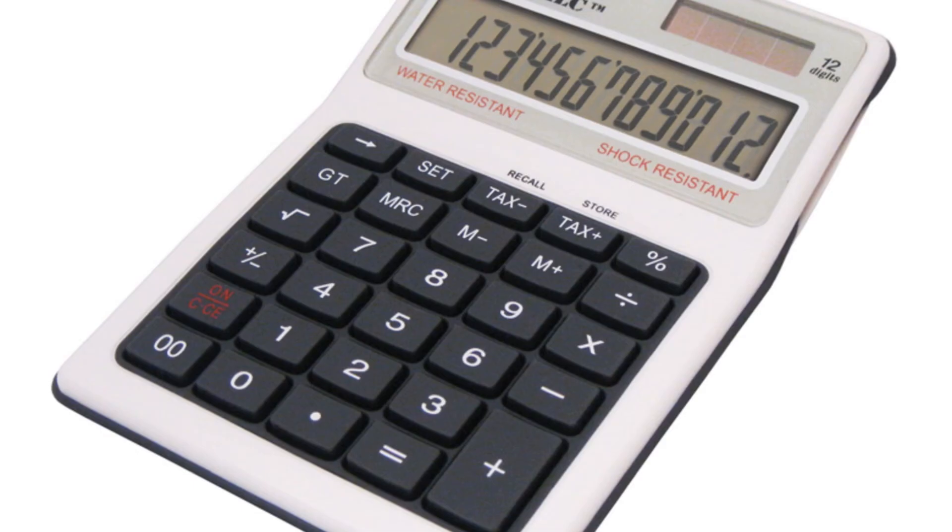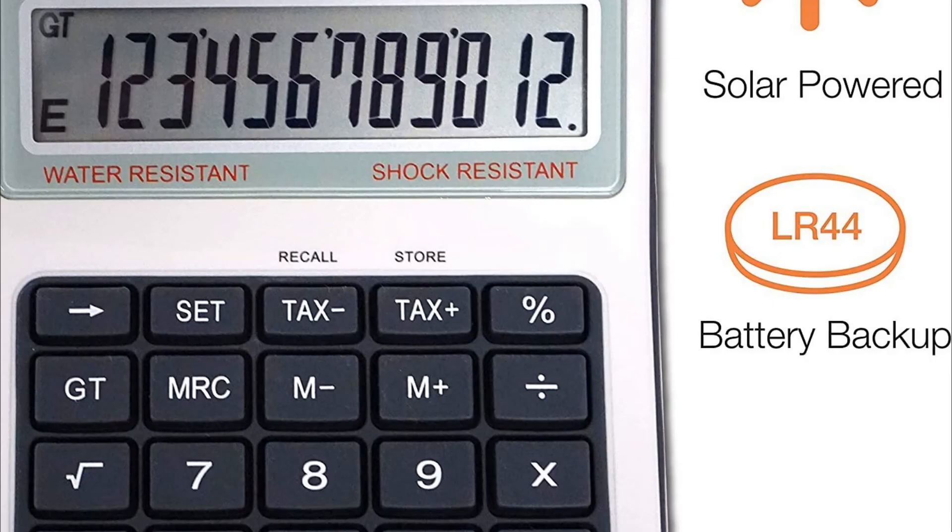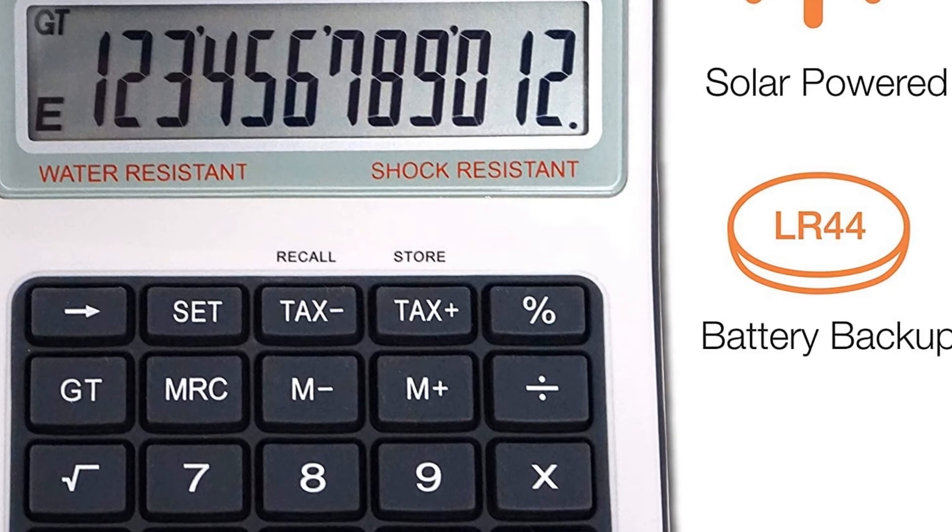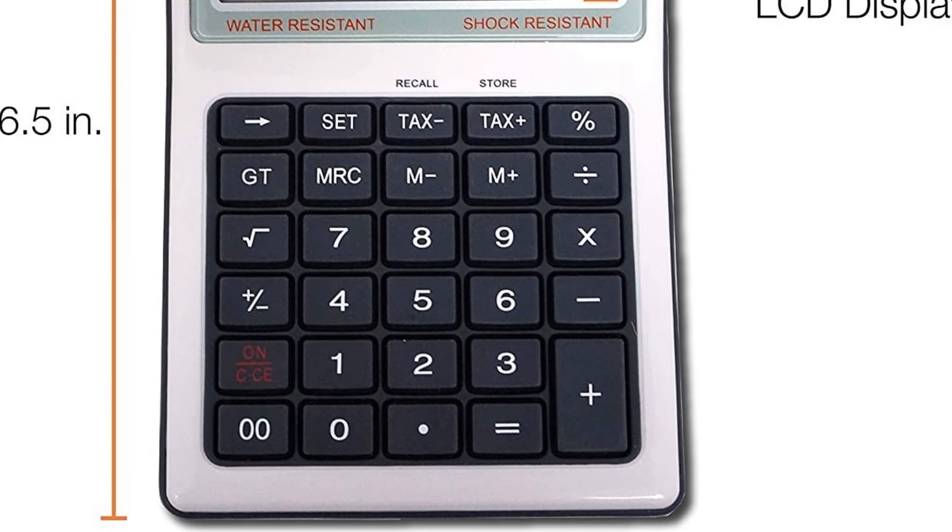Number five: Victor 99901 Tough Calc Calculator. Washable Tough Calc is water resistant and shock resistant. Ideal calculator for extreme working conditions. Design features a sealed rubber keypad and acrylic protected display.